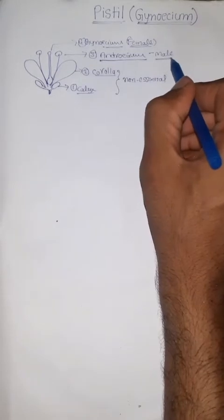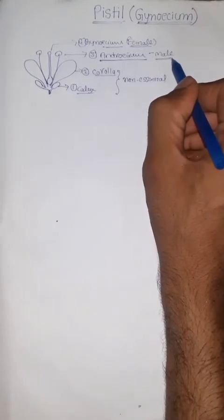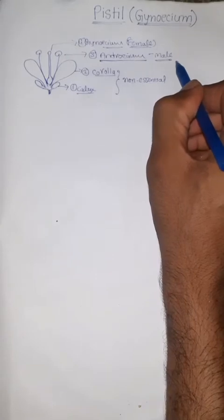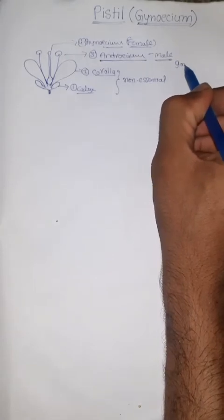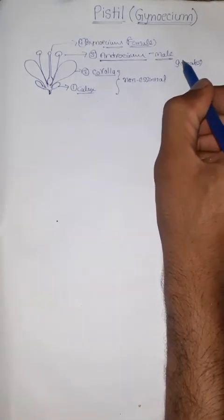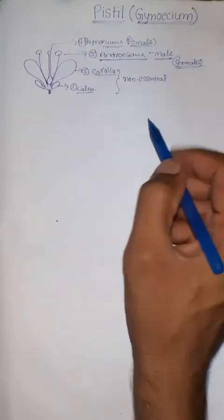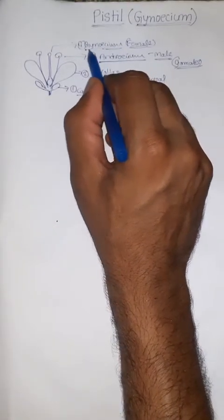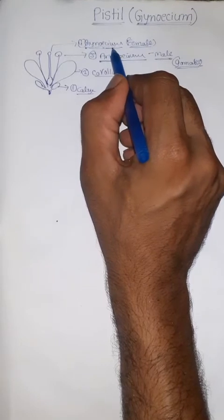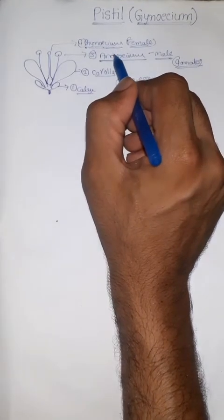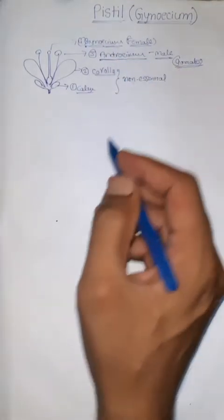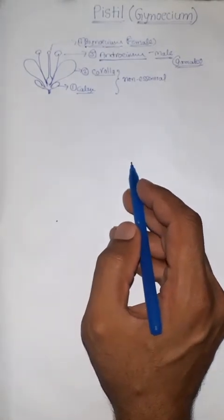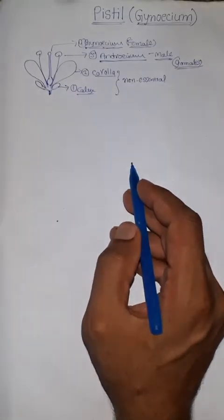Up to pollen grain and gamete formation, we have discussed about Androecium. Now in this video, we will be discussing about Gynoecium — the female reproductive organs. We will see the structure of a typical angiospermic Pistil.